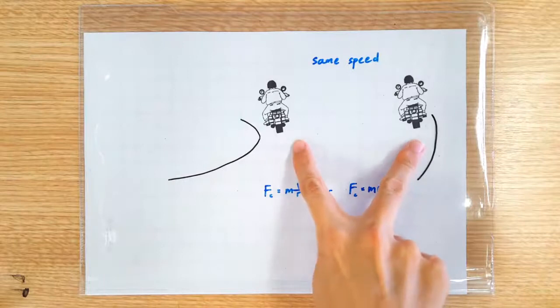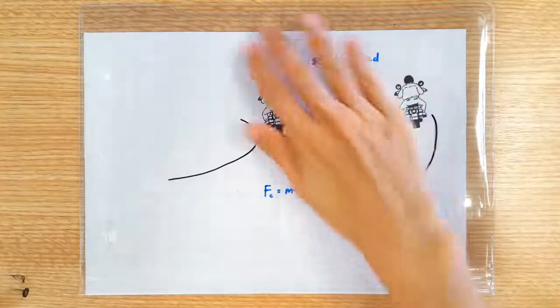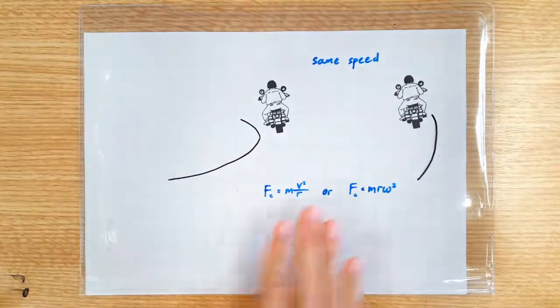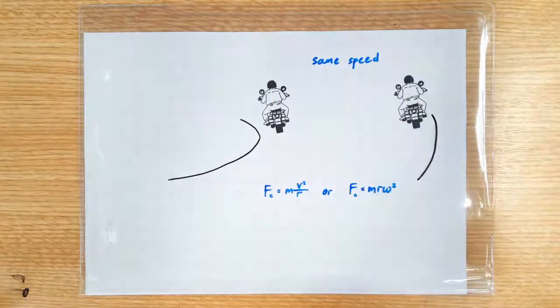Let's have two identical motorcyclists racing into a bend. And let's say they race into the bend at the same speed. One of them slips. Which guy do you think it was?